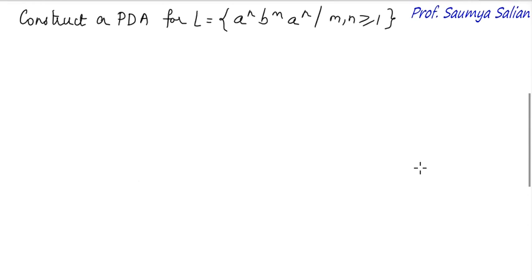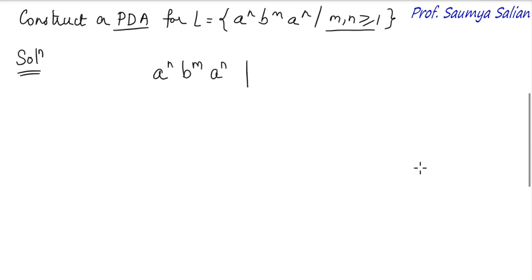Given a question, construct a PDA for the language a to the power n, b to the power m, a to the power n, such that m and n are greater than or equal to 1. We first understand what the language is and what are the different strings in the language. Here I have a^n b^m a^n with m and n greater than or equal to 1.